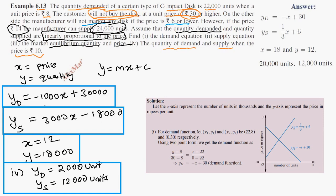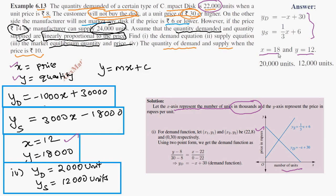Note: there are variations in the textbook answer. The number of units is on one axis (the Y-axis) and the price is on the X-axis. In units of 1,000: the equilibrium is at X = 12, Y = 18,000 units. The demand quantity answer is 20,000 and the supply quantity answer is 12,000.